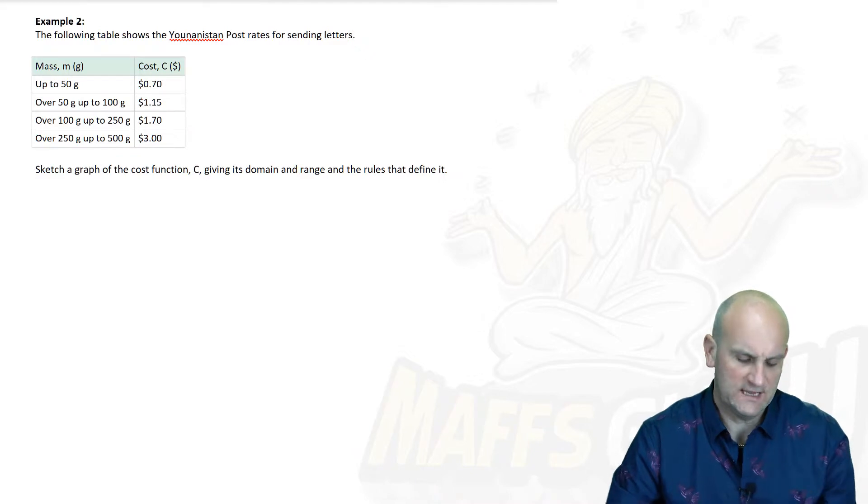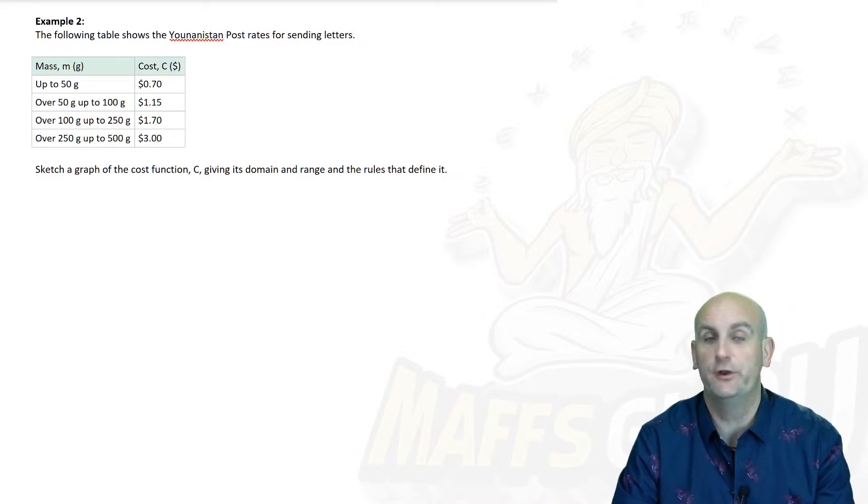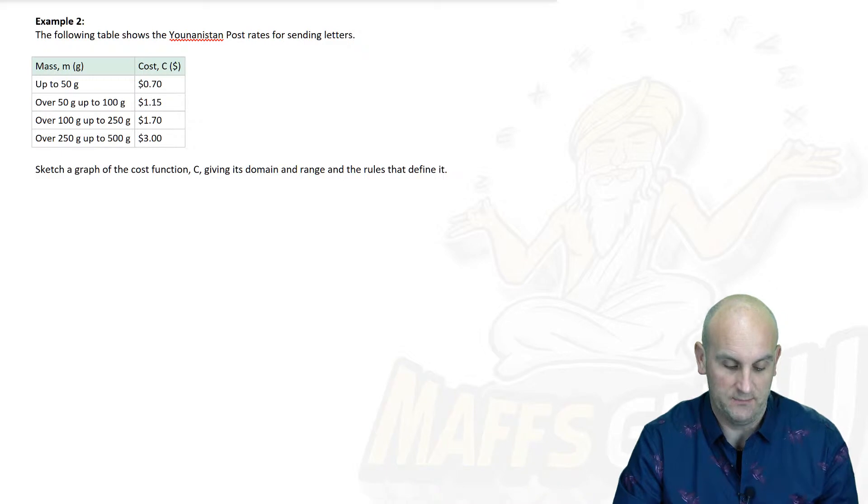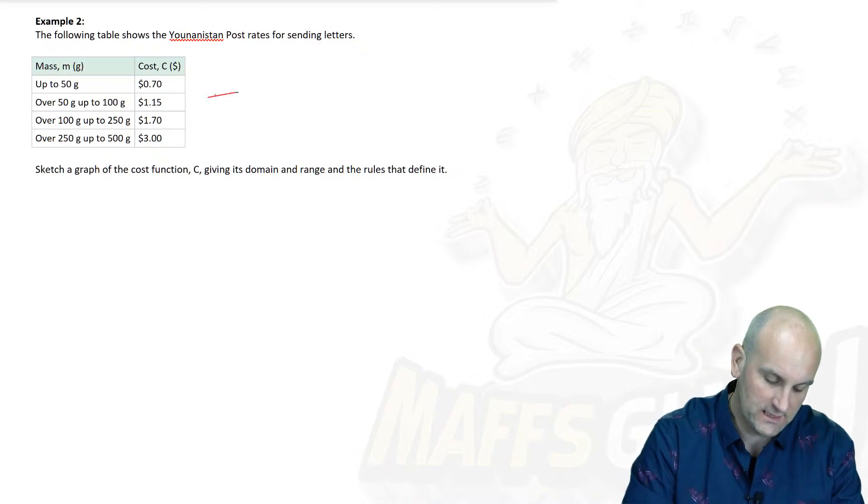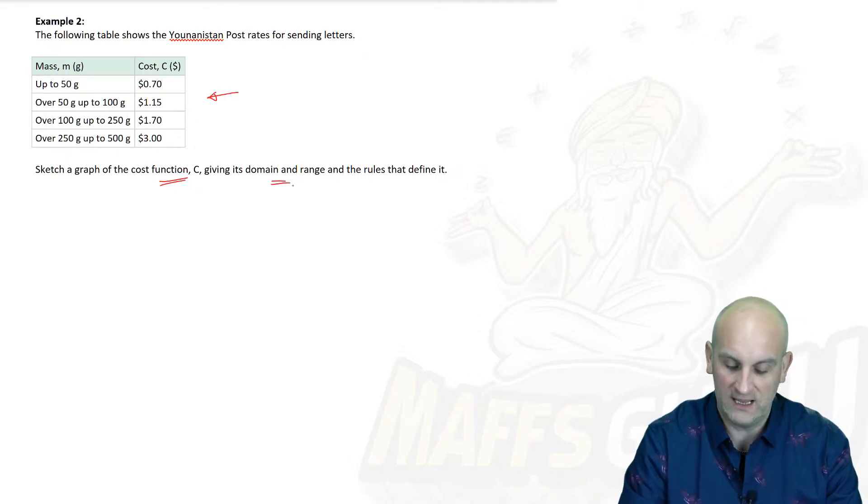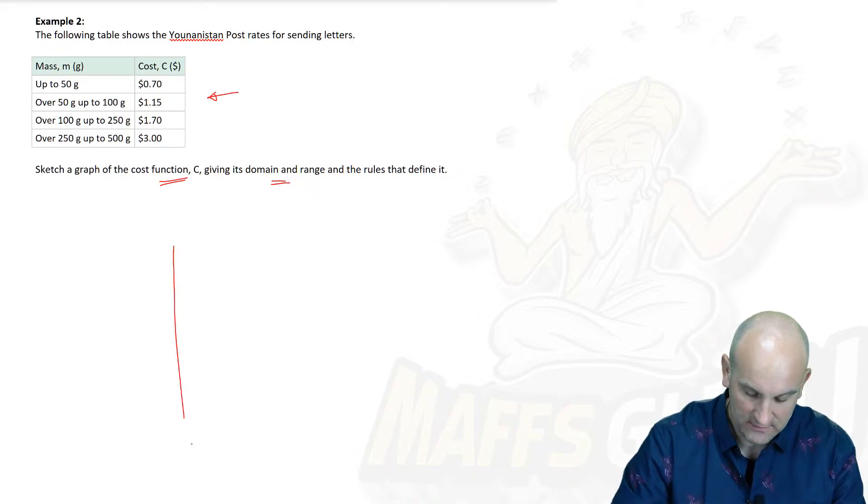In Example 2, the following table shows the unanimous post rates for sending letters. We love sending letters. We've got this information here. And then it says, sketch a graph of the cost function c, giving its domain and range and the rules that define it.